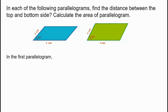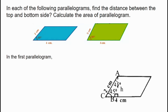We will consider the first parallelogram. The angles of the parallelogram are 45 degrees, 90 degrees, and 45 degrees. These form an isosceles right triangle — a 45-45-90 triangle. The ratio of sides is 1 to 1 to √2. We use this to find the height corresponding to the side of the parallelogram.